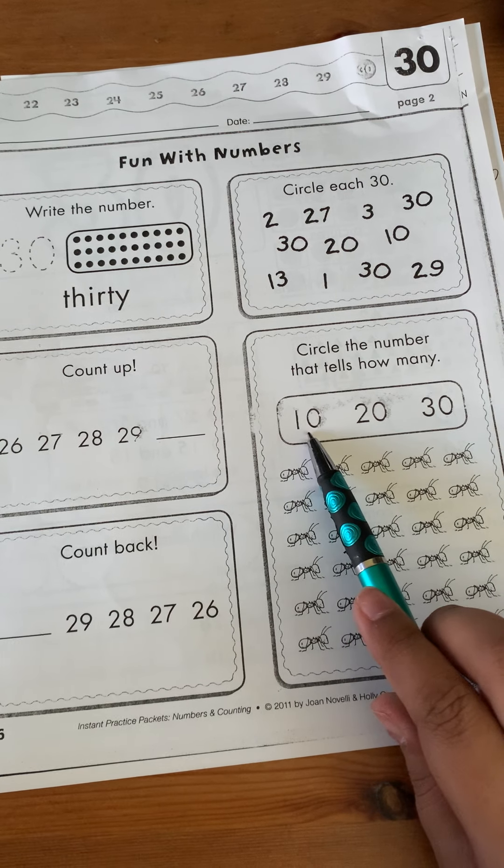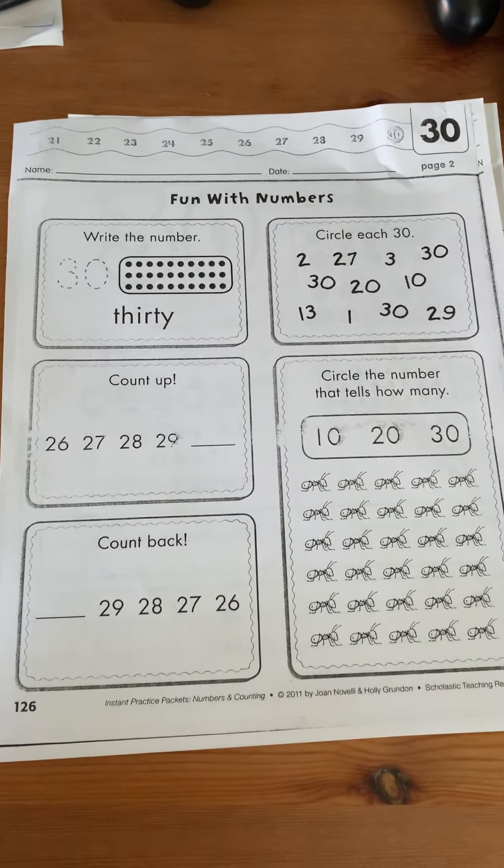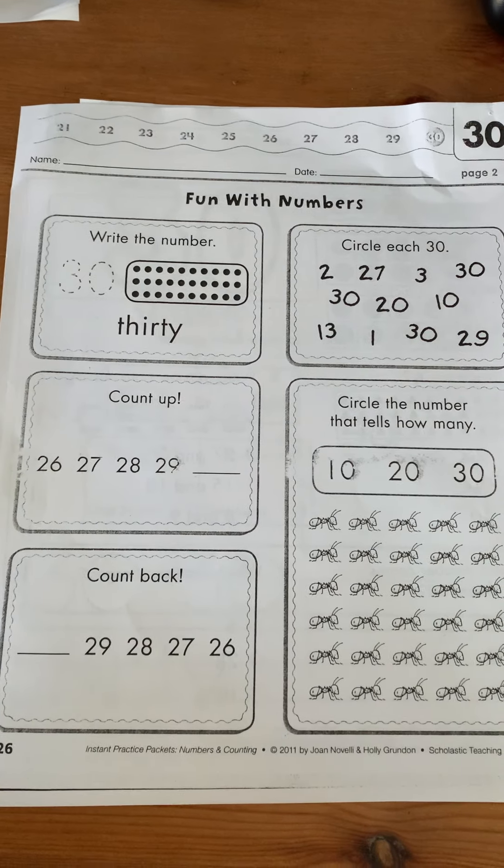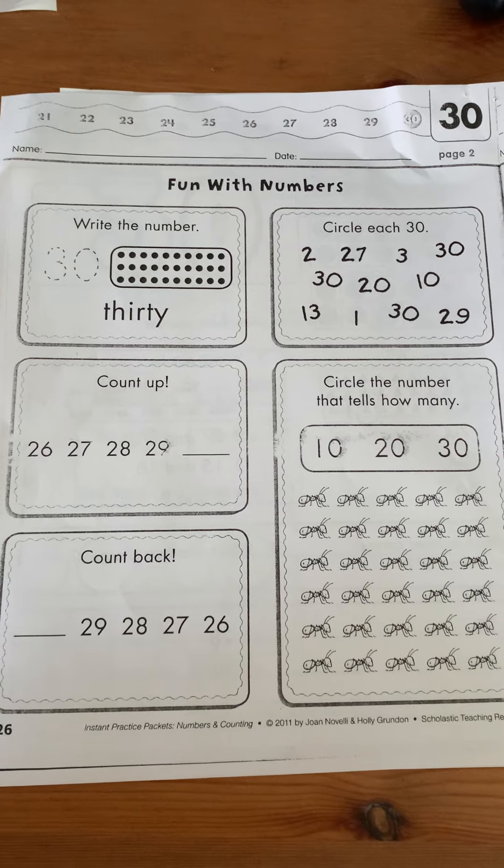It's either there's 10 ants, 20 ants, or 30 ants. So that's what you're going to do today. And remember, just a reminder, we are meeting at 2:30. And I will see you all then.